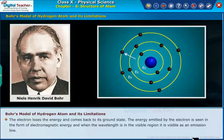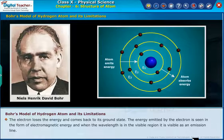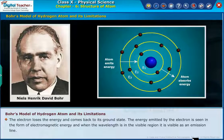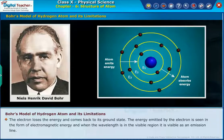The electron loses the energy and comes back to its ground state. The energy emitted by the electron is seen in the form of electromagnetic energy, and when the wavelength is in the visible region, it is visible as an emission line.